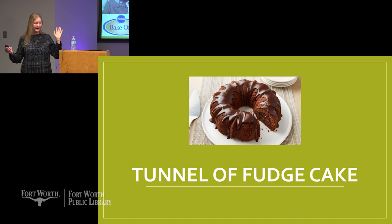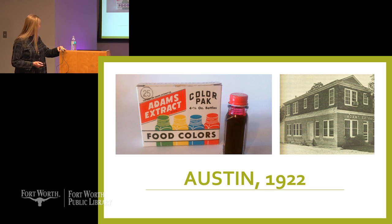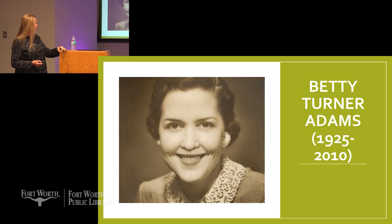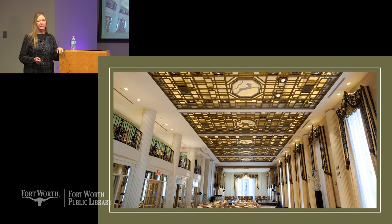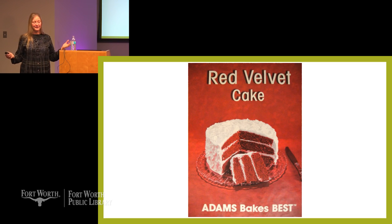The third example goes to Austin in 1922: Adams Extract — maker of vanilla — also makes food coloring. Betty Turner Adams and her husband went to the Waldorf Astoria in New York and had devil's food cake, and the story goes that Betty looked at it and said, 'You know, we could dye that red and sell a whole lot of food coloring.' Ta-da — red velvet cake. Red velvet cake is really nothing but a chocolate cake with lots and lots of red food coloring and a wonderful icing. Three kinds of Texas-innovated cakes right there.